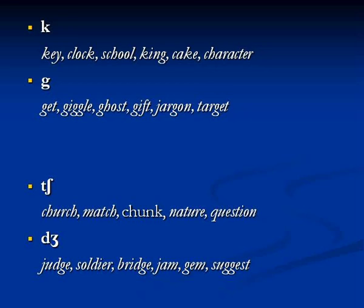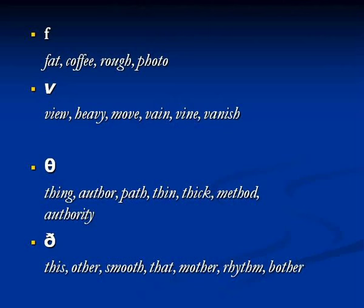The next pair is Ch and J. Ch is voiceless, J is voiced. Ch as in church, match, chunk, nature, question. J as in judge, soldier, bridge, jam, gem, suggest. The next pair is F and V. F is voiceless, V is voiced. F as in fat, coffee, rough, photo. V as in view, heavy, move, vain, vine and vanish.